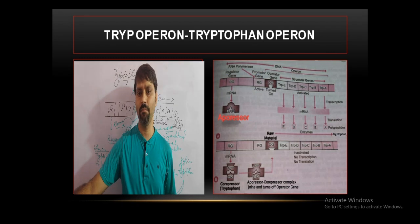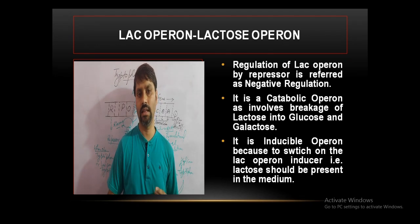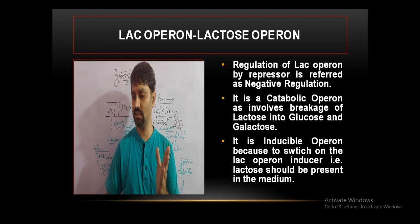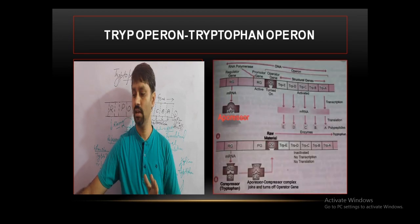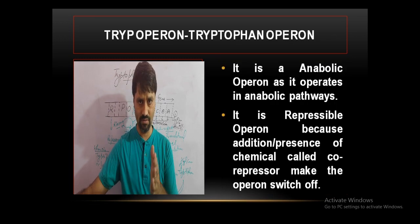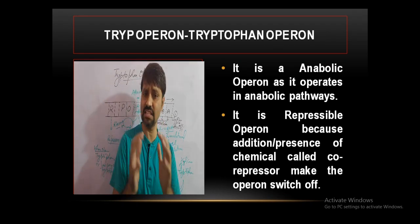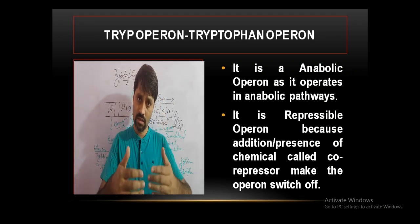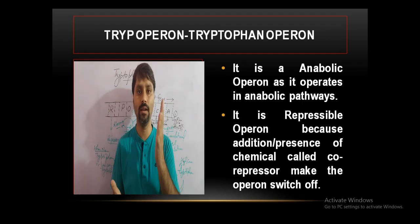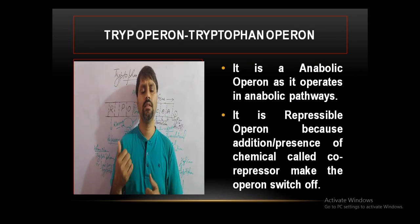Today we are going to discuss a very important operon — the tryptophan operon. Compared to the lac operon, which is a negative regulation, catabolic, and inducible operon, the tryptophan operon is an anabolic operon. It is also a repressible operon. The inducer switches on the operon, but here a chemical present in the system will switch off the operon.